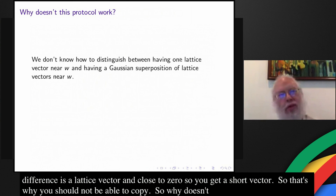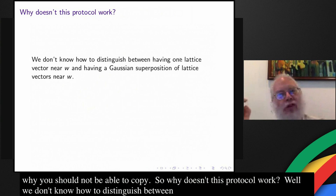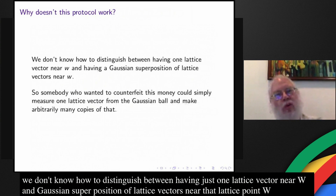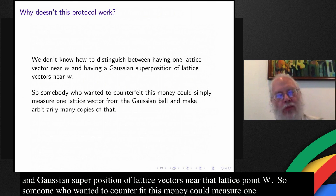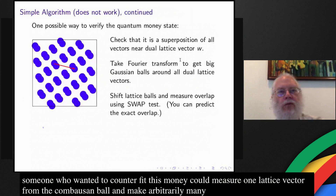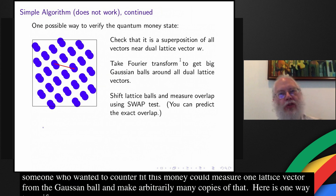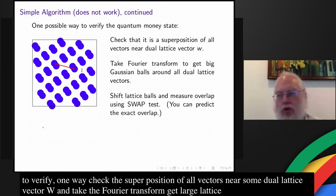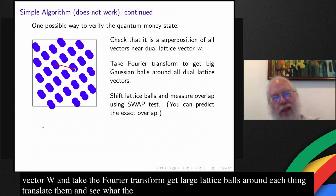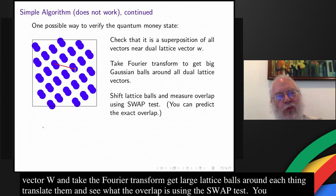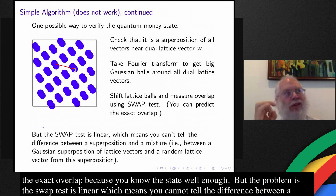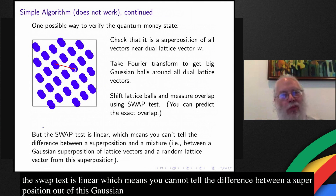So why doesn't this protocol work? We don't know how to distinguish between having just one lattice vector near w and a Gaussian superposition of lattice vectors near w. So someone who wanted to counterfeit this money could simply measure one lattice vector from the Gaussian ball and make arbitrarily many copies of that. One way to try to verify the quantum money state is to check that it's a superposition of all vectors near some dual lattice vector w, take the Fourier transform to get large lattice balls around each point, translate them and see the overlap using the swap test. You can predict the exact overlap because you know the state well enough. But the problem is that the swap test is linear, which means you cannot tell the difference between a superposition of this Gaussian ball and just a random point in the original Gaussian ball.